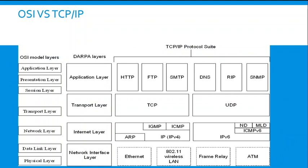As you can see from the animation, the OSI model layers, the DARPA layers, and the TCP/IP protocol suite — including HTTP, FTP, SMTP, DNS, RIP, and SNMP — have all been discussed.